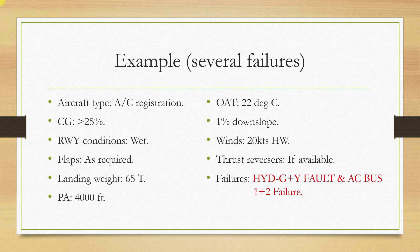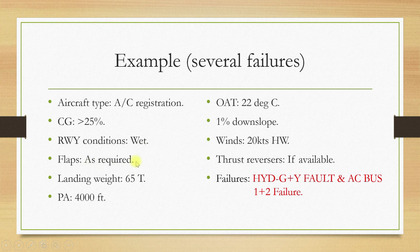This is our example which we will consider of several failures. Please note this example down. Aircraft type: a particular aircraft against which you will be opening the QRH relevant sections. CG is greater than 25%. Runway conditions: wet. Flaps as required, which we will come to know according to our failures. Landing weight is 65 tonnes. Pressure altitude at destination airfield is 4000 feet. Outside air temperature at destination airport is 22 degrees centigrade. Destination airport has a 1% down slope.